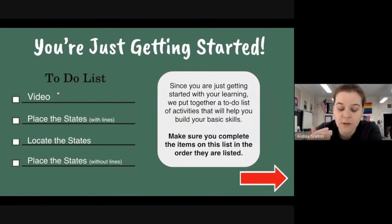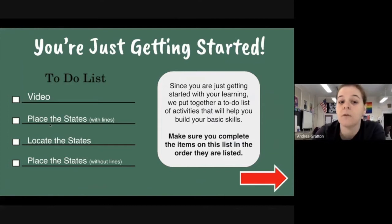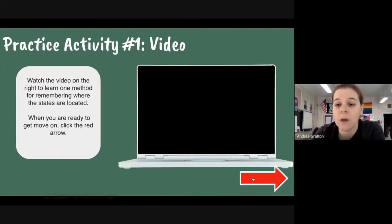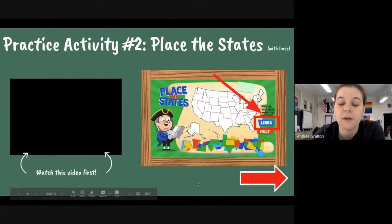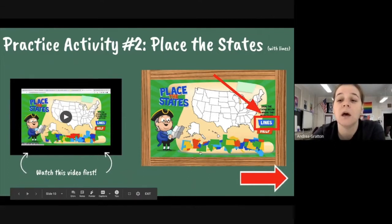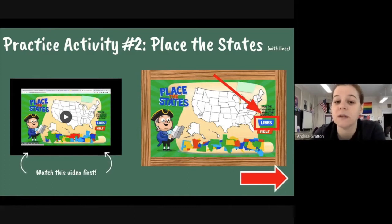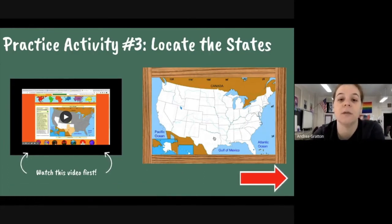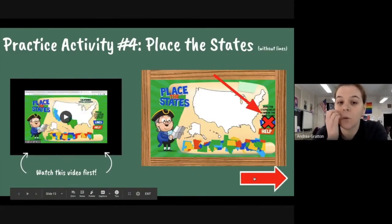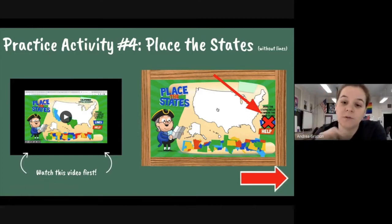The orange circle takes them to a structured list of tasks to complete in order to build up basic skills. The first is a video — directions on the left, activity on the right. The second is a game where they play with state boundary lines visible so they can see the borders. The third is a more complex game. The fourth is the same game but with boundary lines gone, so now they need to demonstrate their understanding of state locations without those lines.